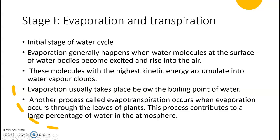Evaporation usually takes place below the boiling point of water. Plants absorb water through their roots, and water moves through the stems, leaves, fruits, and flowers. The water from these external parts of plants escapes into the atmosphere — this process is called transpiration. The water from leaves and living bodies evaporates into the atmosphere through transpiration.